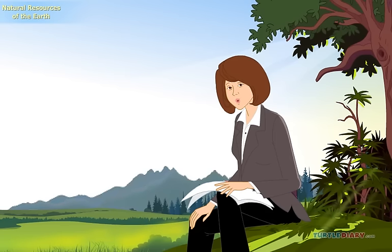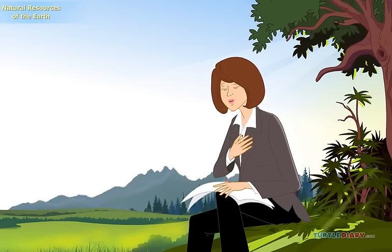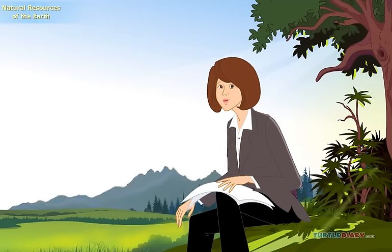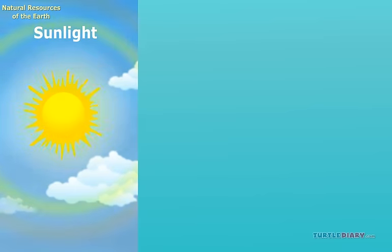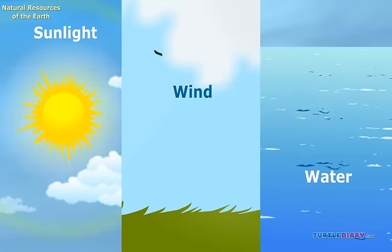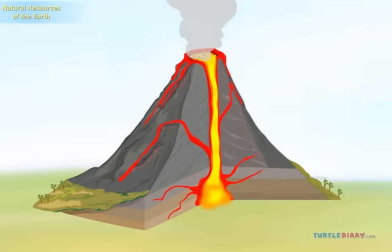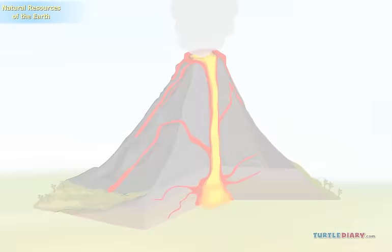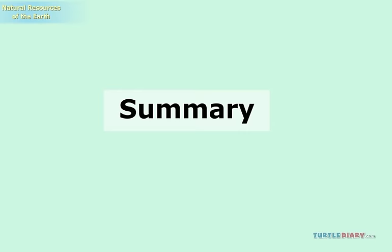It is very important to conserve these — that means to take care of them and not waste them. We can use other sources of energy. We can use energy made from renewable resources. We can use the sunlight, the wind, and water. We can use energy from plants. We can also use energy from the ground. Let us now summarize what we have learned.